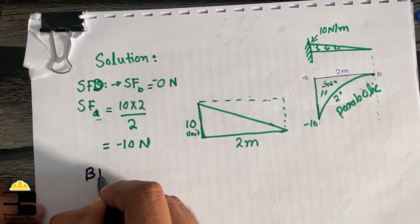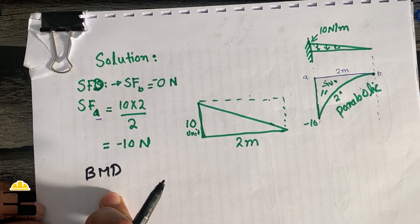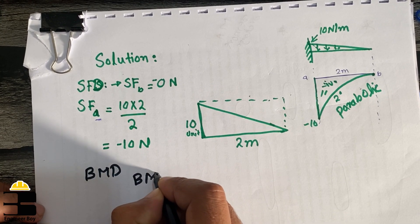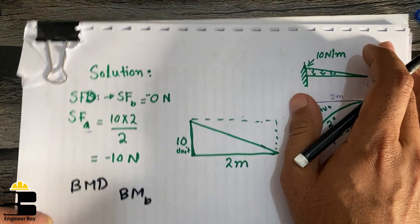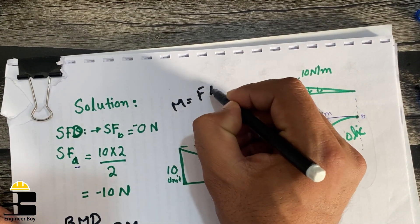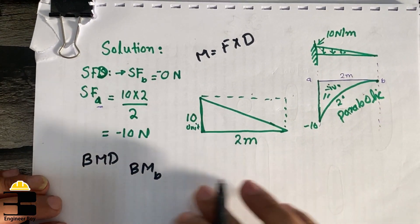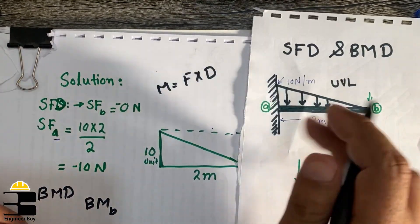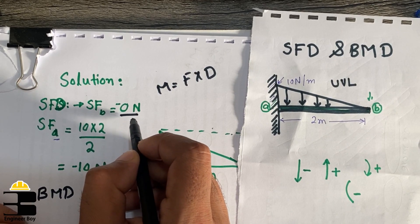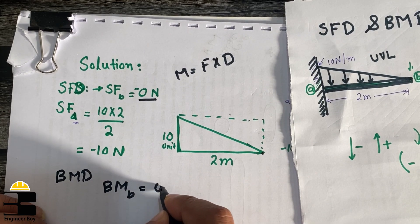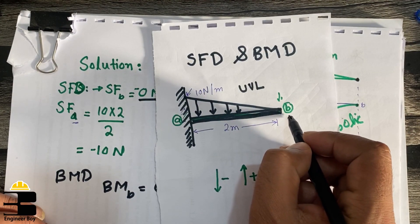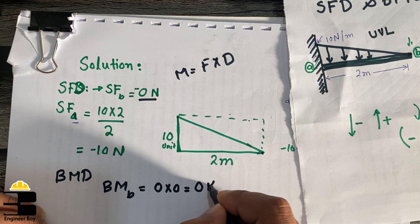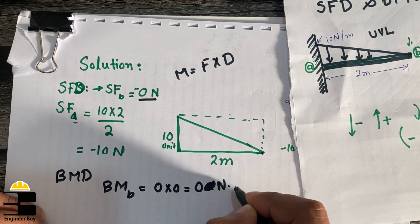Now let's do the bending moment diagram. Remember, bending moment equals force times distance. At point B, the force is zero — as we already noted in the shear force calculation — and the distance from B to B is also zero. So zero times zero equals zero Newton-meters. At point B, the bending moment is zero.